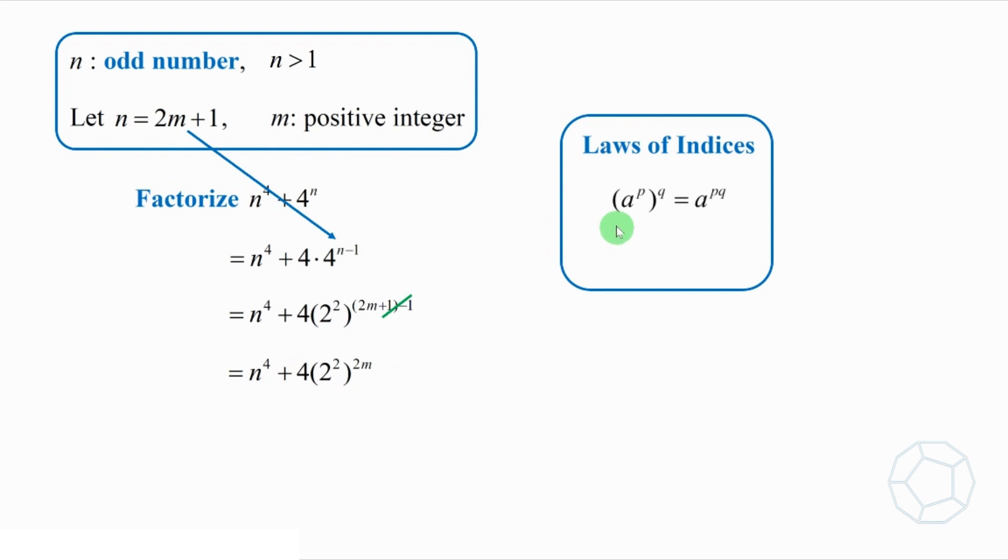By the laws of indices, a to the power p, the whole thing to the power q, is equal to a to the power of p times q. If we reverse p and q, we get the same result. So, let's reverse the two indices, 2 and 2m. For the first term, n to the power 4, we write it as n squared, the whole thing squared.